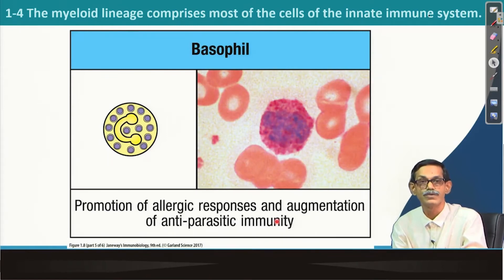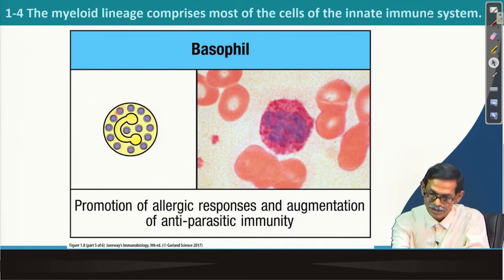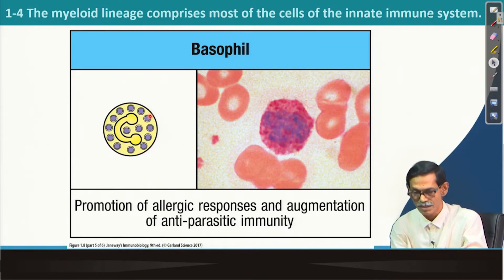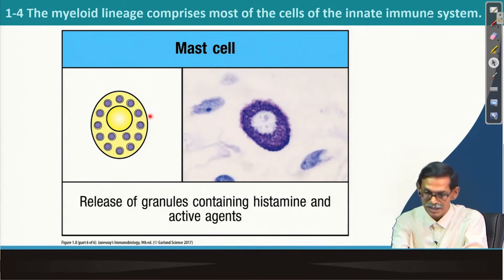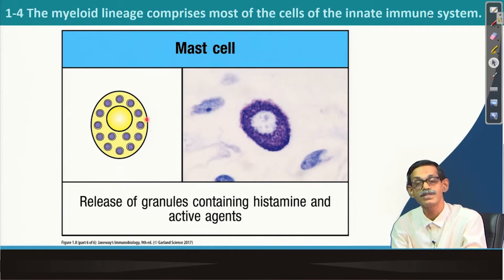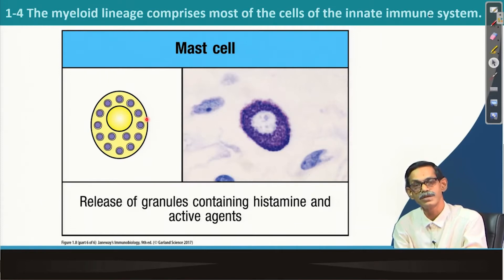Basophils are involved in the promotion of allergic responses and augmentation of antiparasitic immunity. You can see that basophils are filled with granules containing different chemicals used to carry out this immunity. Mast cells are also very much involved in active immunity. Their granules are full of histamine. If you are already aware, histamine is responsible mostly for allergic responses. When there is allergy, mast cells are the major component driving that allergic response.